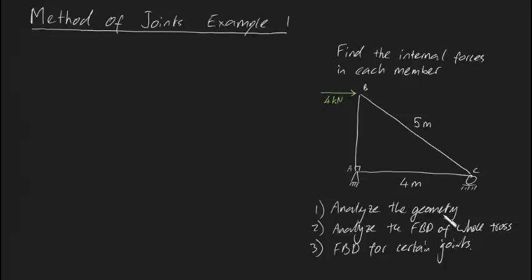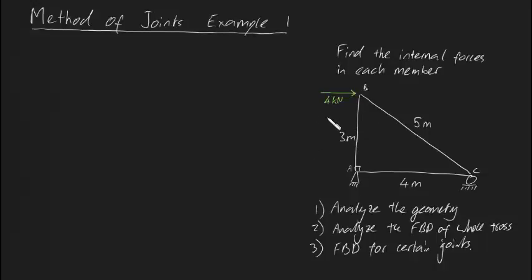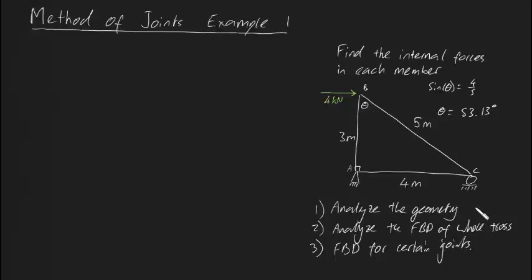Step one: analyze the geometry. Let's find out what this length is. We know it's going to be equal to the square root of 5 squared minus 4 squared — because this is a triangle, we're just using Pythagoras. That's equal to the square root of 25 minus 16, which is 9, so that's 3 meters. Now let's figure out angle theta. We know sine theta equals 4 divided by 5, which means theta equals inverse sine of 4/5, which is 53.13 degrees using your calculator.